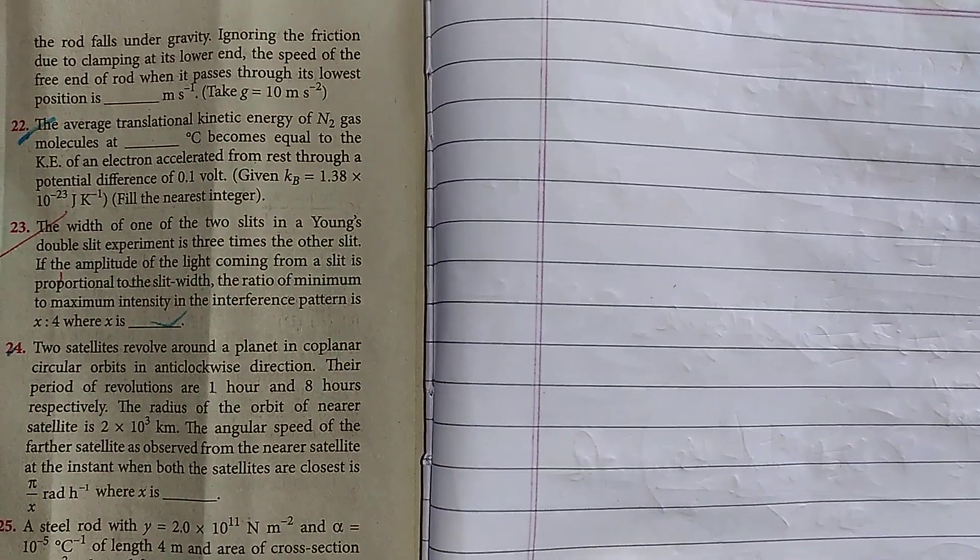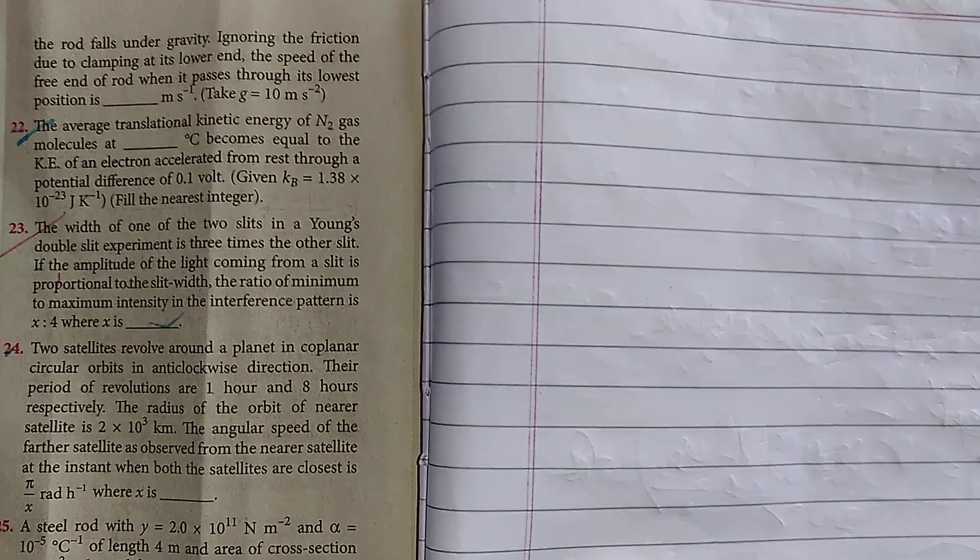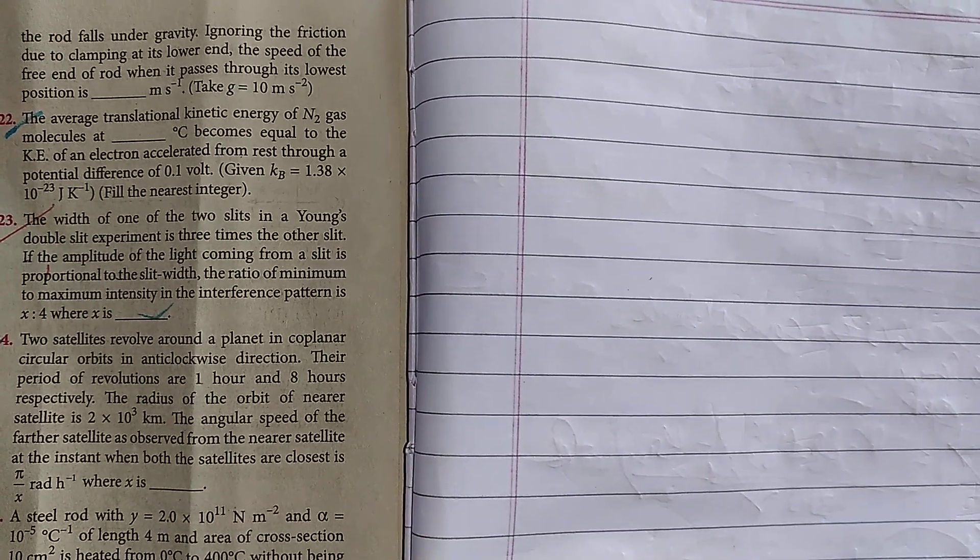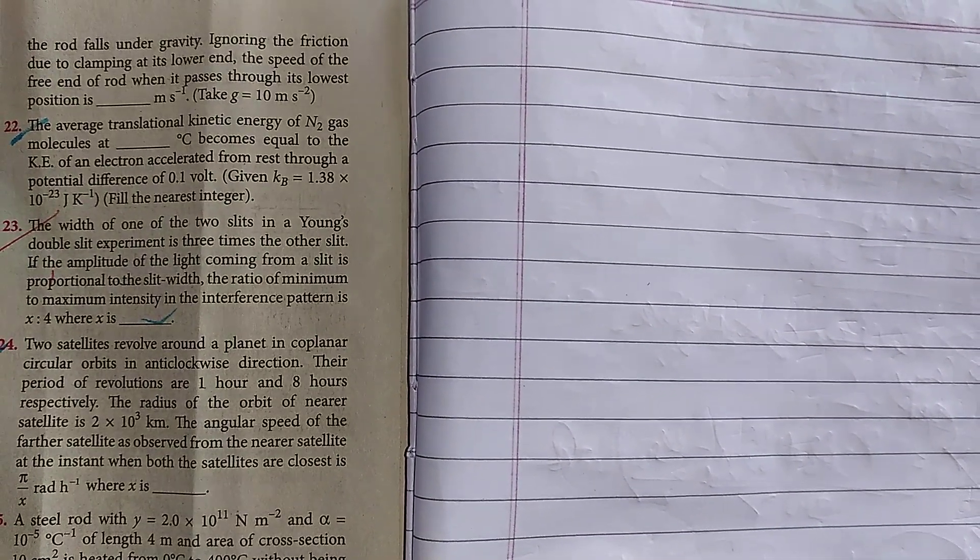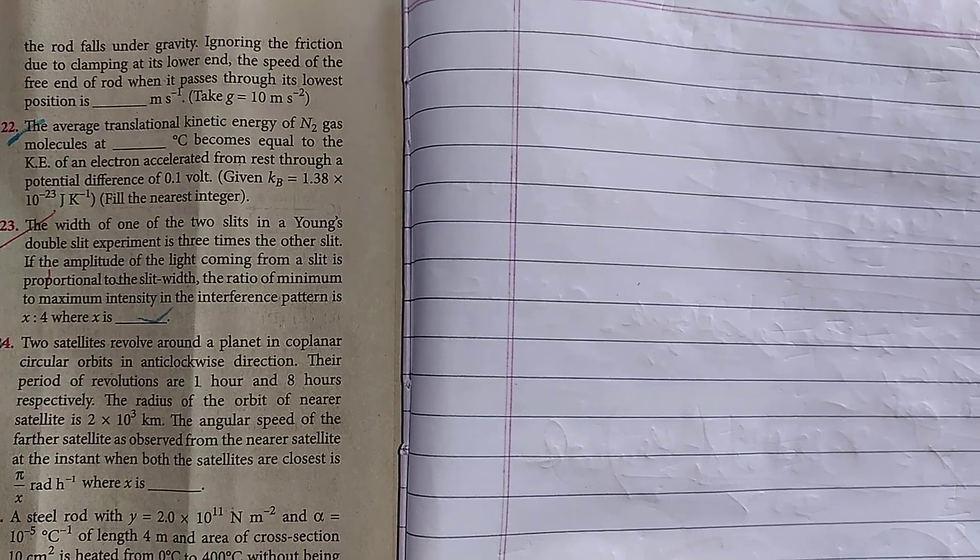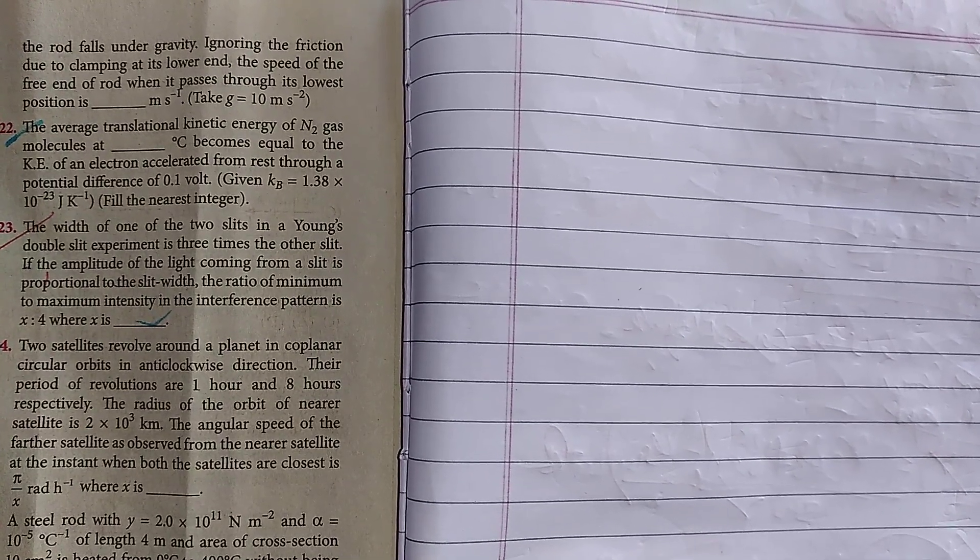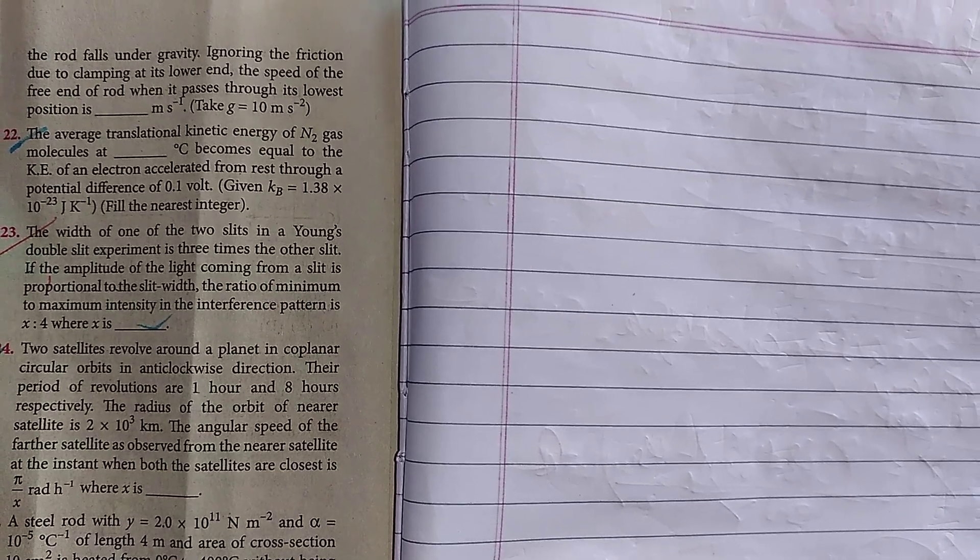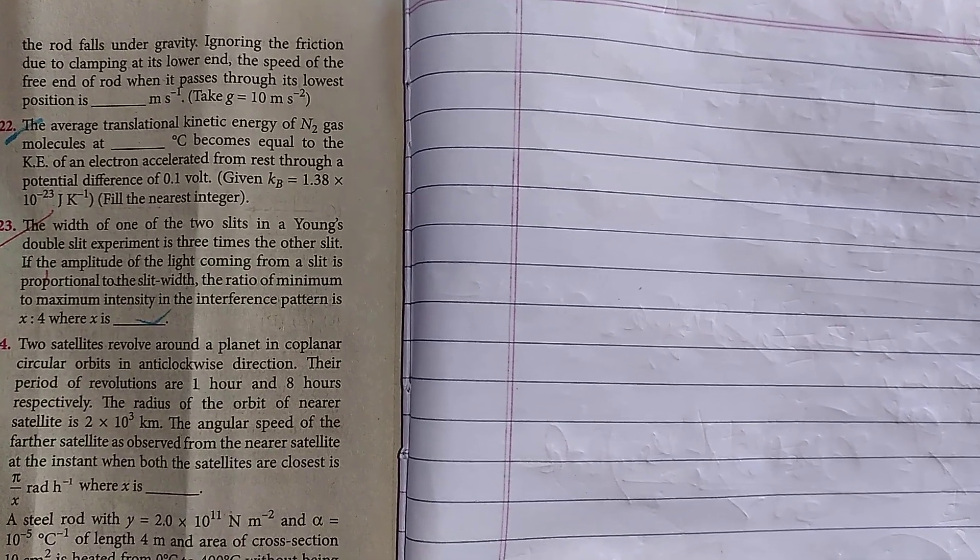And this problem basically is used in kinetic theory of gases and potential expression. The average kinetic energy of N2 gas molecules at T degree centigrade becomes equal to the kinetic energy of electron accelerated from rest through a potential difference. So basically the N2 gas molecules.